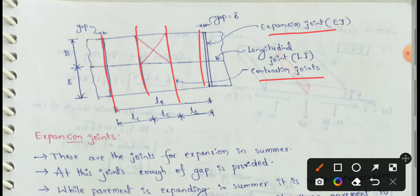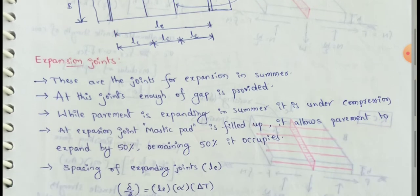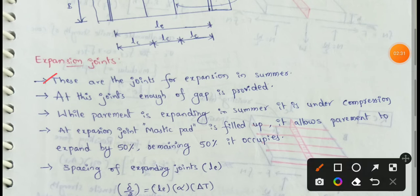The expansion joint is to allow the expansion of the pavement due to a rise in temperature with respect to construction temperature. These are the joints for expansion in summer.